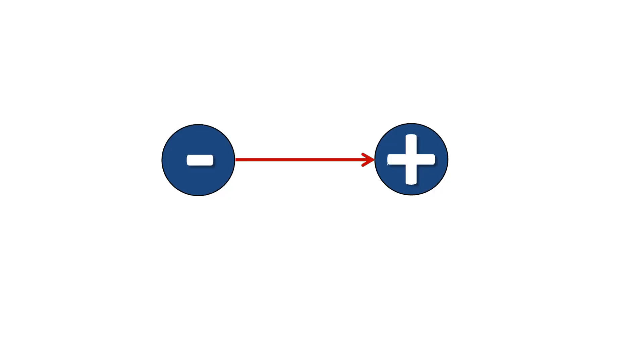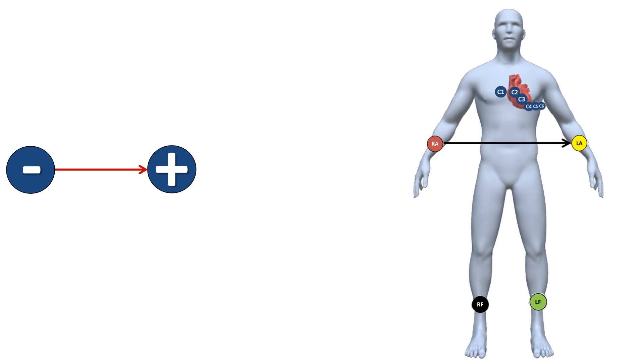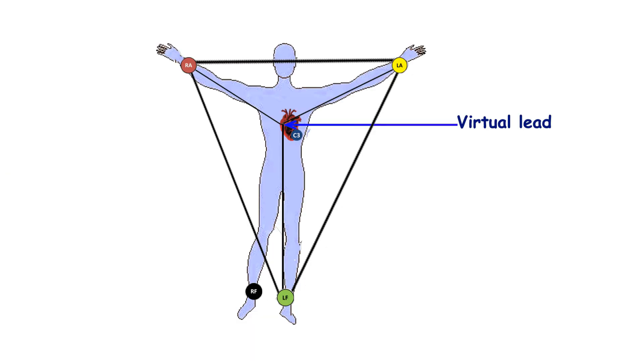Any two electrodes can measure the electrical potential difference between two certain locations. Lead is imaging of electrical activity of the heart in graphical form. Lead may be formed between any two physical electrodes as well as between the physical electrode and the virtual electrode.